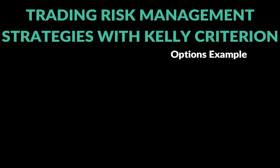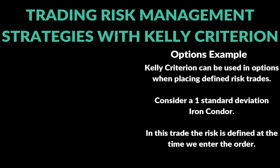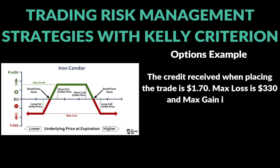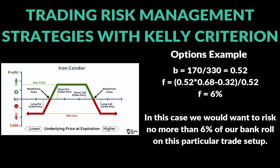The last example is from options trading. You can apply the Kelly Criterion to any defined-risk trade — anything where you know the risk at order entry. Here I used a one-standard-deviation iron condor with made-up numbers: a credit received of $170, a max loss of $330, and a max gain of $170. At one standard deviation, the win percentage is 68%. Plugging in those numbers gives a 6% Kelly value before any fractional adjustment.